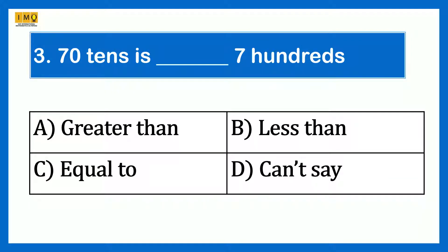70 tenths is dash 7 hundredths. Option A greater than, Option B less than, Option C equal to, Option D can't say. 70 tenths is 700. Therefore, the answer is Option C equal to. 70 tenths equals 700.